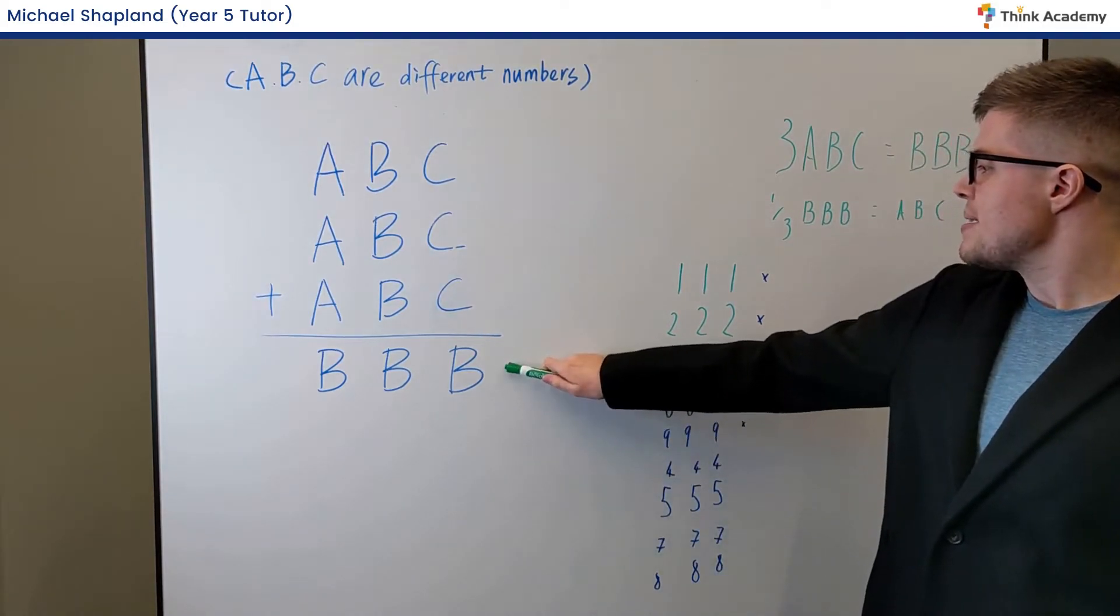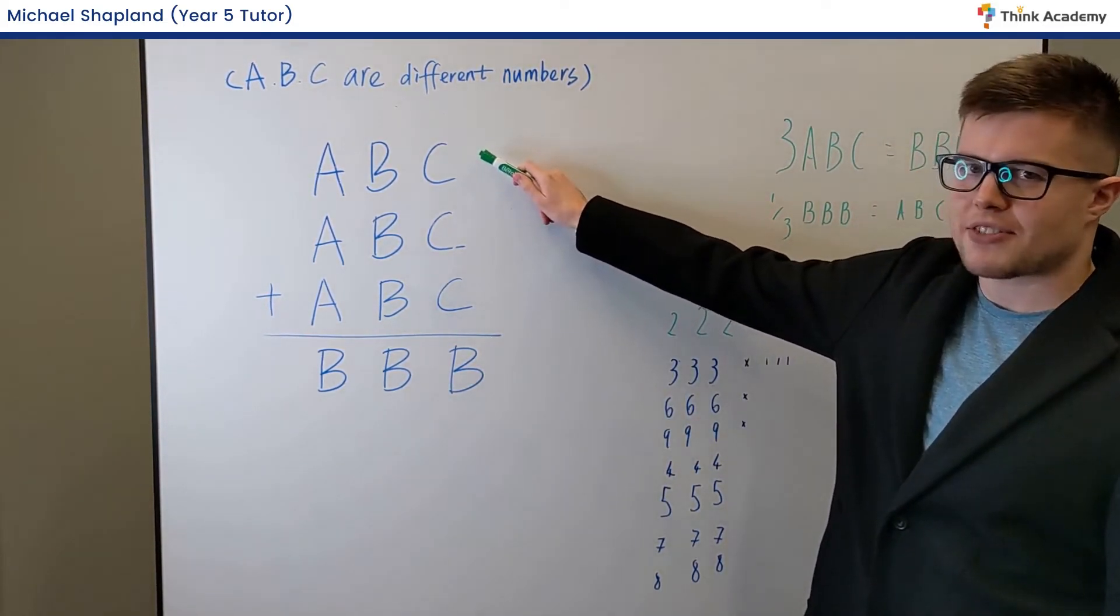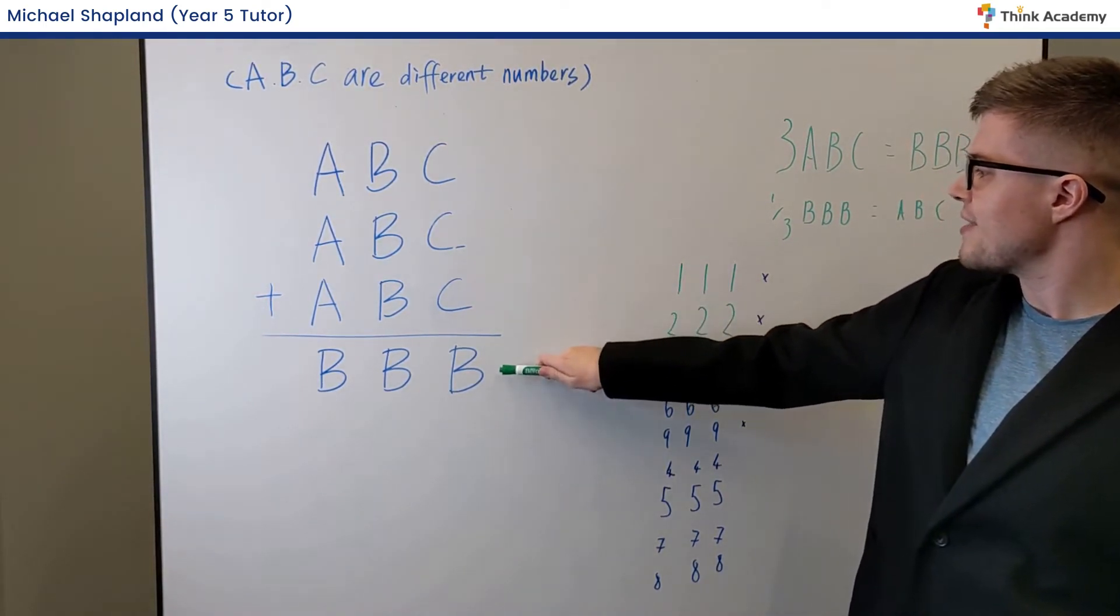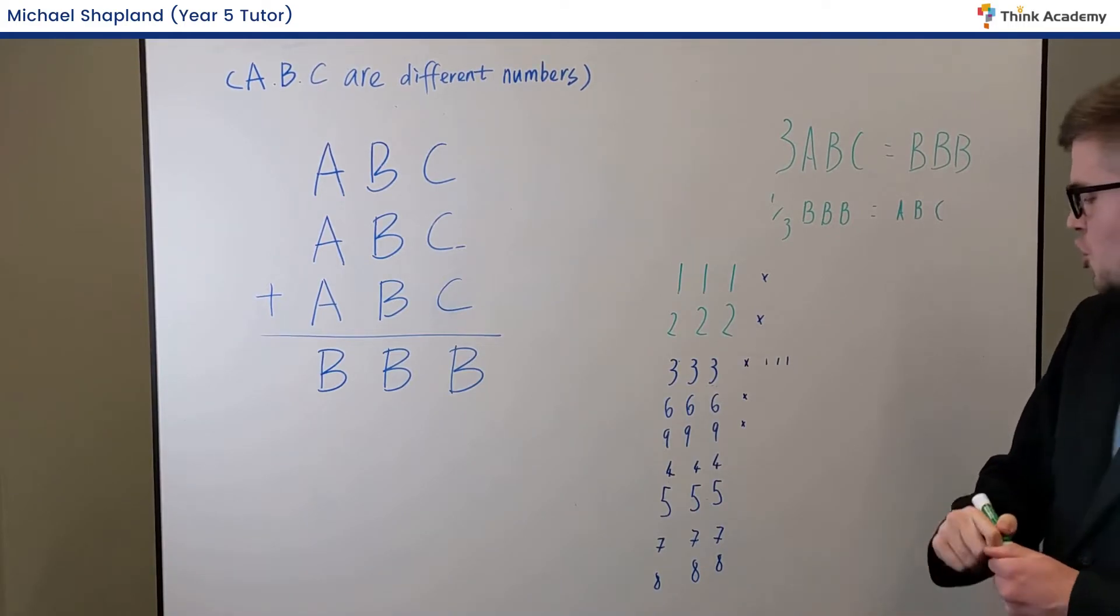Well, if B is 5, C must be 5 as well, because 5 times 3 is 15, leaving 5 in the units column. And again, C and B have to be different.